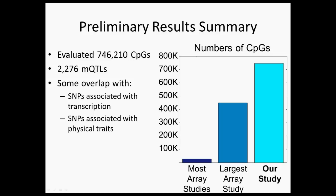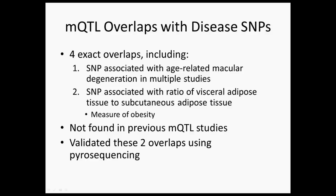In addition, some of these SNPs have been previously shown to be associated with physical traits. Four of these SNPs are associated with diseases, and there are two we thought were particularly interesting. One is a SNP that has been shown to be associated with age-related macular degeneration in multiple studies. The other is a SNP shown to be associated with the ratio of visceral adipose tissue to subcutaneous adipose tissue, which is a measure of obesity. Neither of these SNPs were found to be MQTLs in previous studies, because they occur in CpGs that do not occur near other CpGs and were therefore not looked at.